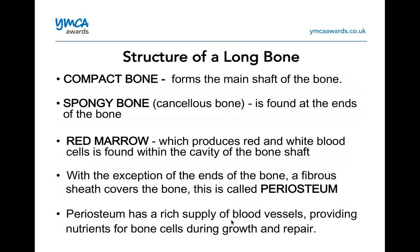The structure of a long bone: you've got your compact bone, which forms the main shaft of the bone. Then there's spongy or cancellous bone, which is found at the ends of each bone. Then we have our red marrow, which produces red and white blood cells, found within the cavity of the bone shaft — in the middle. With the exception of the ends of the bone, a fibrous sheath covers the bone called the periosteum, and it runs around the outside.